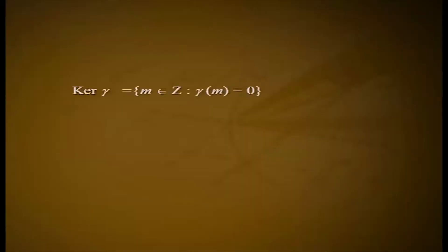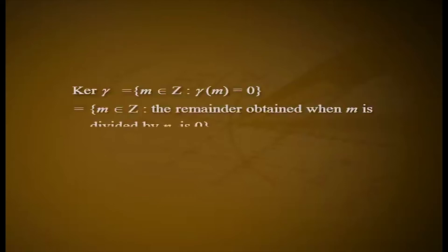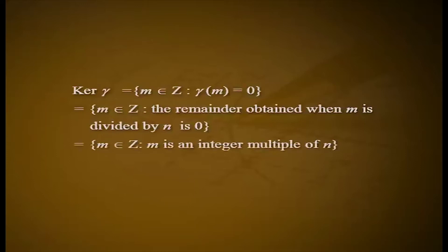Example 7: We have seen that the canonical map gamma from Z to Zn given by gamma of m equals r, where r is the remainder when m is divided by n, is a homomorphism. Its kernel is given by: ker gamma equals the set of m in Z such that gamma of m equals 0, which equals the set of m in Z such that the remainder when m is divided by n is 0, which equals the set of m in Z such that m is an integer multiple of n, which equals nZ.